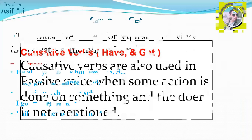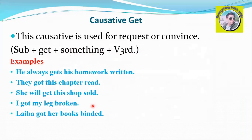Now let's discuss 'get' causative in the passive first. This causative is used for request or to convince someone. 'Get' causative in the passive voice is used for requesting or convincing.